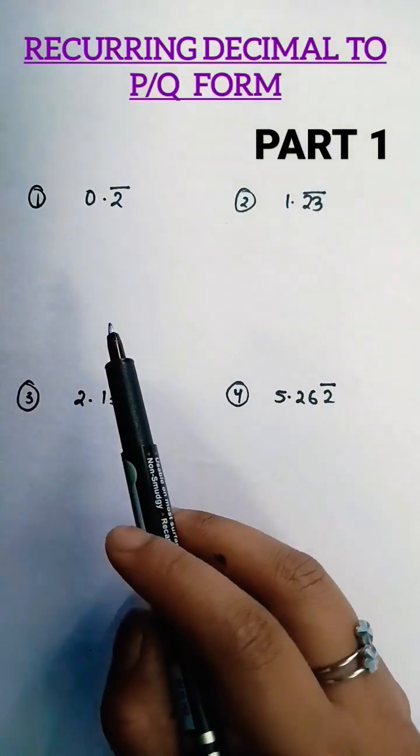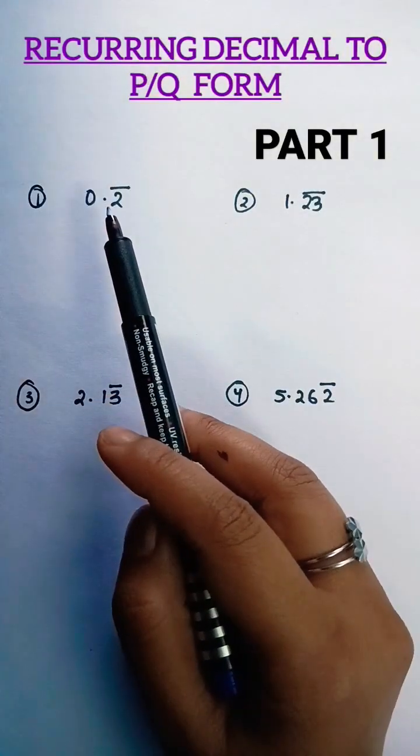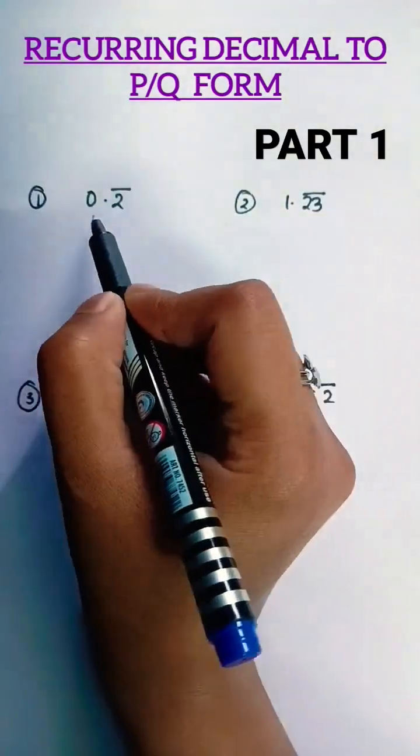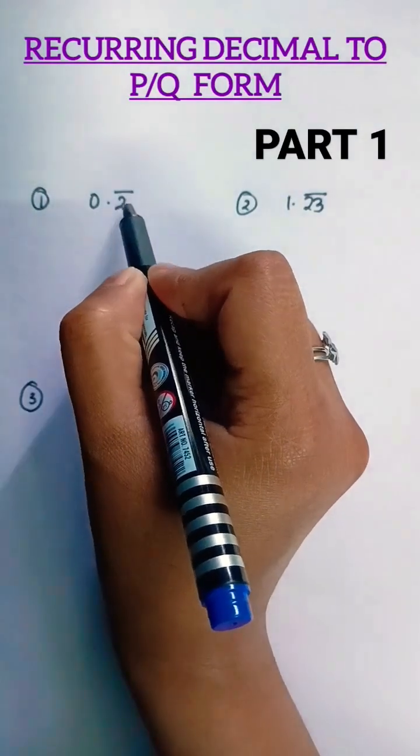Dear students, here we will see the most interesting trick to convert any given decimal form into P by Q representation. The important trick is, whatever number you have, first of all, you will see how many digits you have.